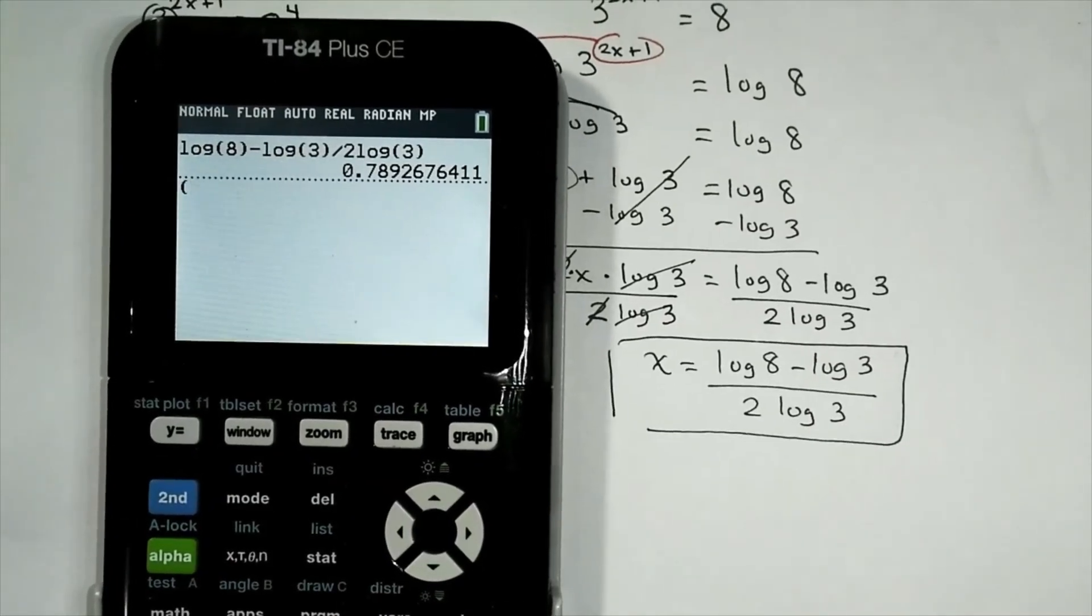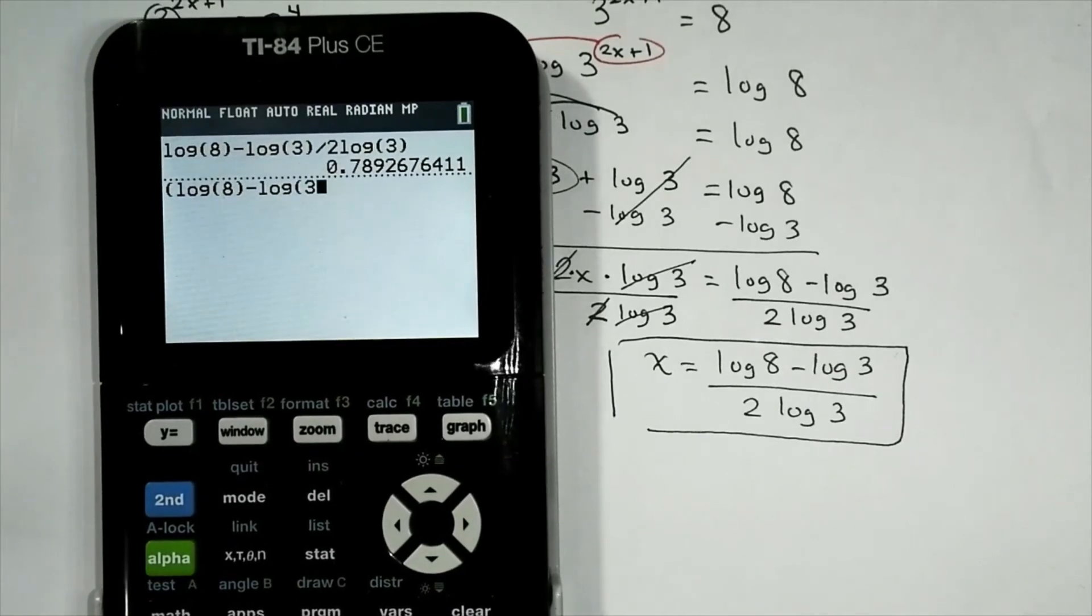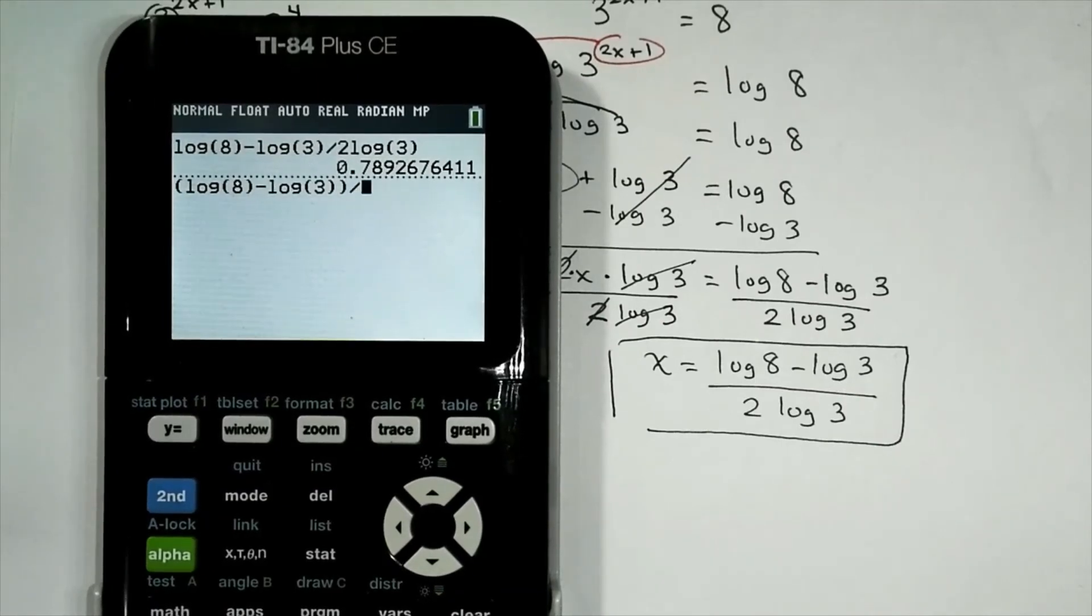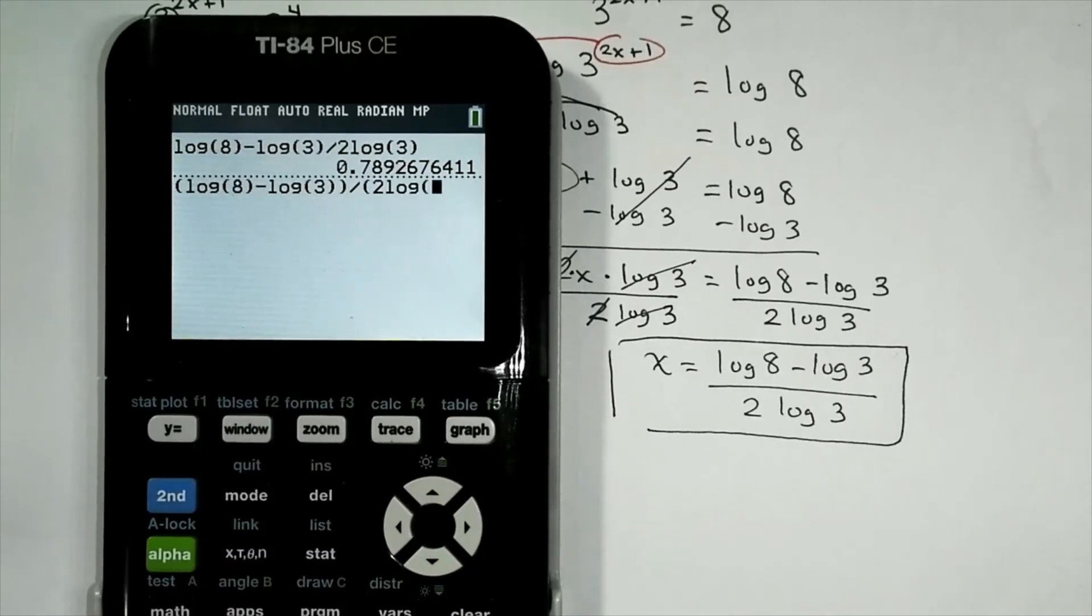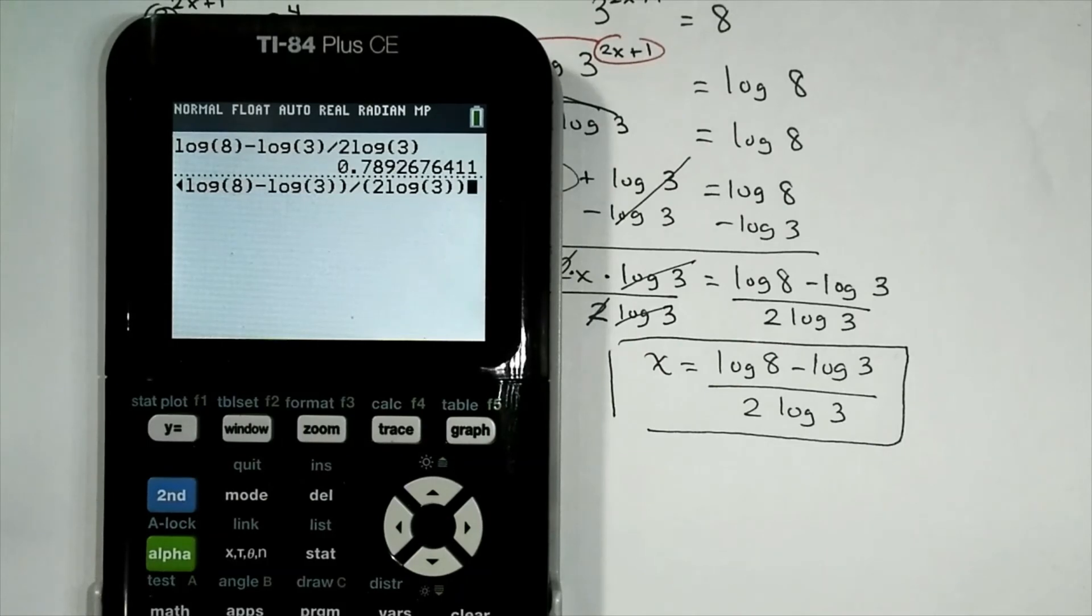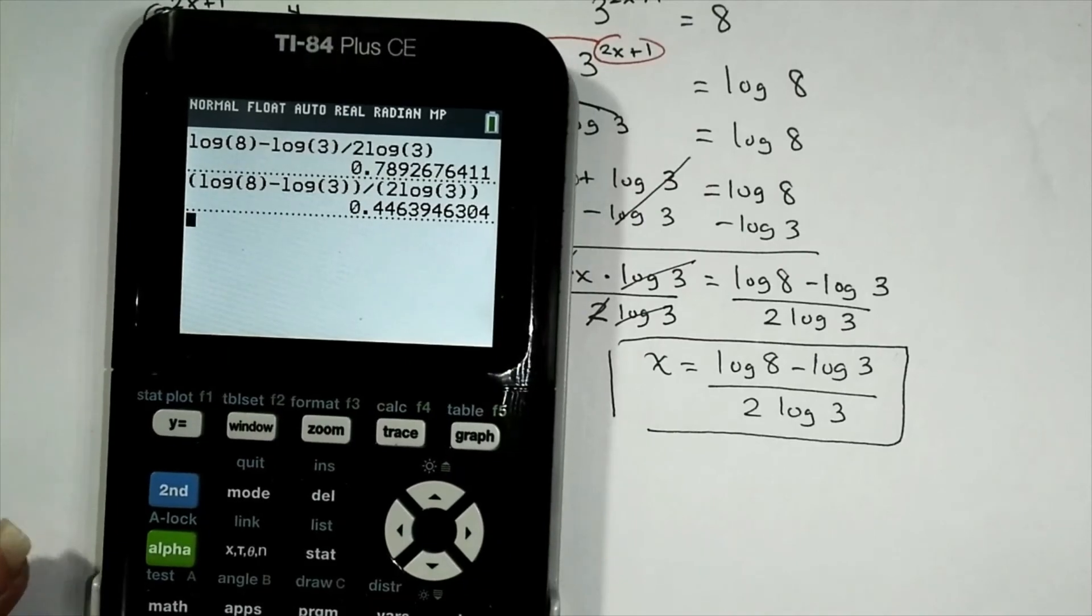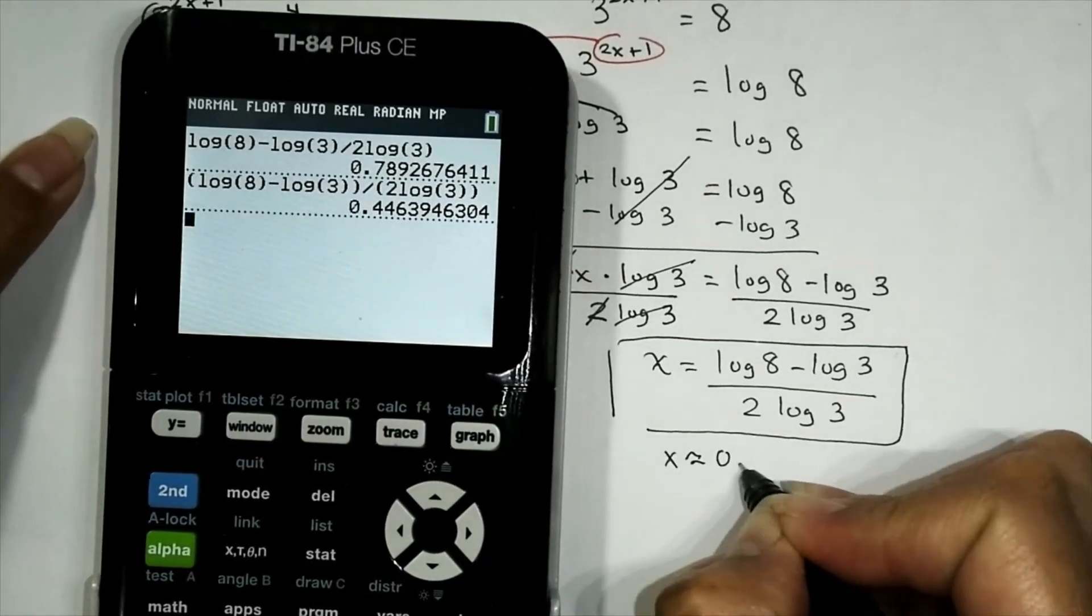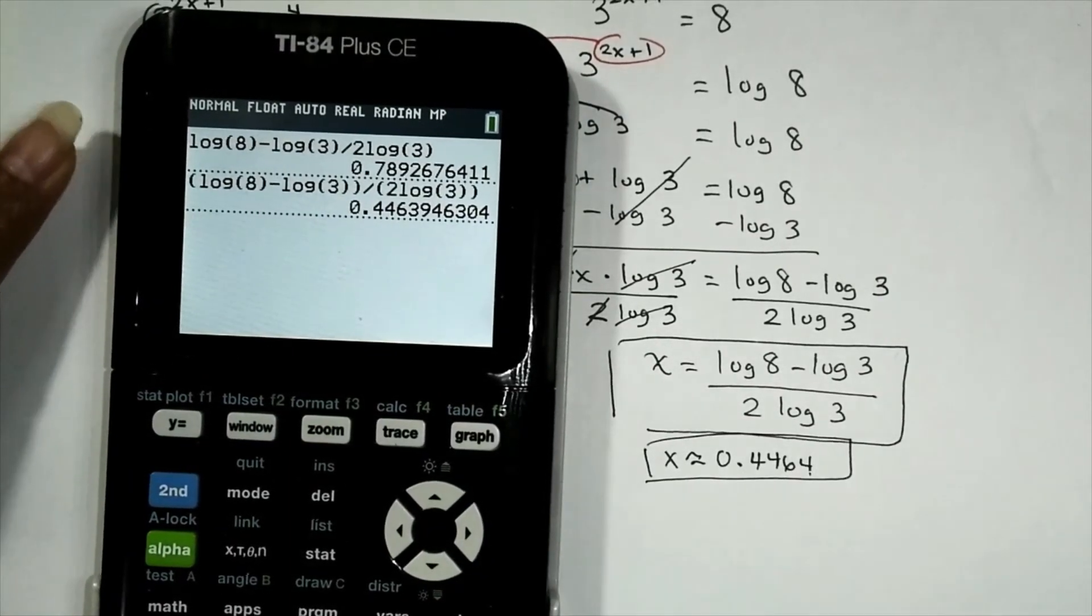So we have log 8 minus log 3. So we're going to close the argument and then we're going to close the numerator. Divide that by, let's go ahead, open the denominator and that will give us 2 log 3. Close the argument. Close the denominator. I think I said numerator by mistake. And let's go ahead, enter it. We take our time, round it to four decimal places. And I believe that should give us about x equals 0.4464. And that wraps up the set of exercises.